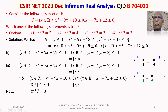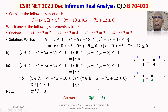Looking at our options, option 3 states that the infimum of U is 3. Therefore the answer to this question is option 3. That is the detailed discussion of the solution of this problem from real analysis. It is definitely a very easy question — questions of this type, of this easiness, appear only rarely and not always.